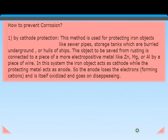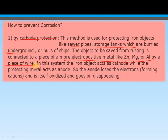These are some factors responsible for corrosion. Now, how do we prevent corrosion? The first method is cathodic protection. This method is used for protecting iron objects like sewerage pipes and storage tanks buried underground. The object to be protected from rusting is connected with a piece of more electro-positive metal like zinc, magnesium, or aluminium by a wire. In this system, the iron object acts as a cathode while the protecting metal acts as an anode. The anode loses electrons, forming a cation, and is itself oxidized and goes on disappearing, so our iron object is not corroded.